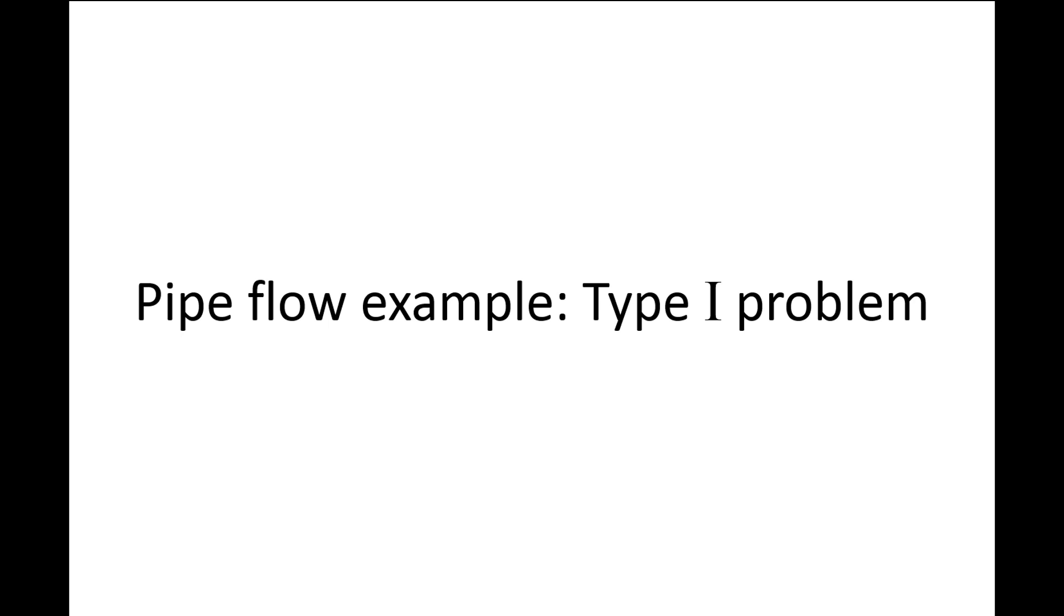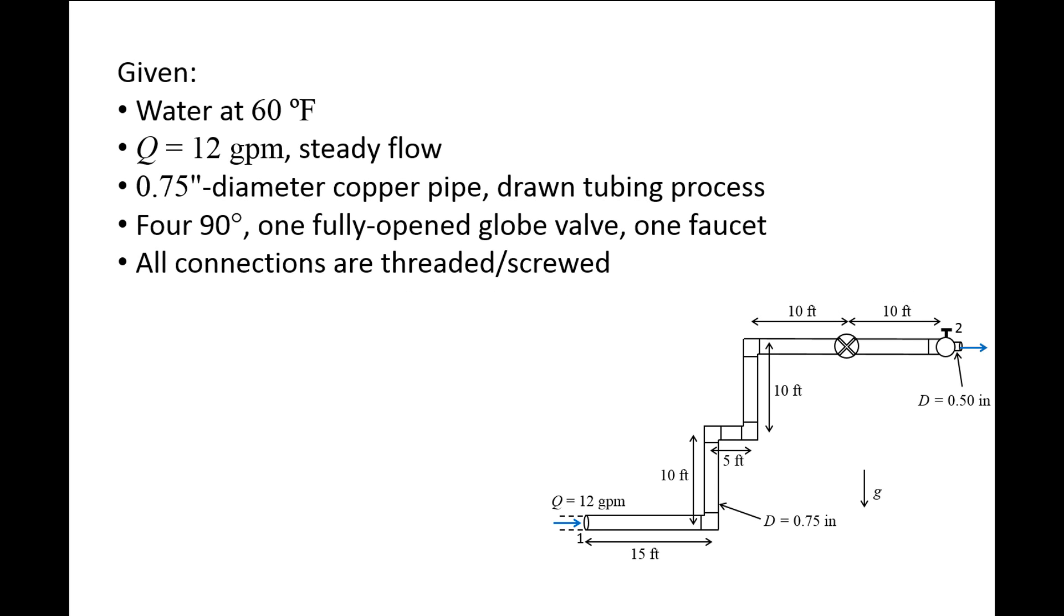In this lesson, we'll discuss an example of a Type 1 pipe flow problem. On the right, we have a diagram showing part of a pipe system. Water at 60 degrees Fahrenheit enters the pipe system at 1, is transported uphill, and exits through a faucet at 2. The flow rate through this system is steady at 12 gallons per minute.